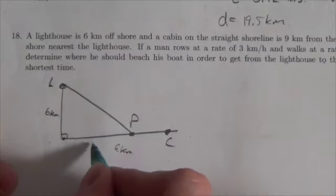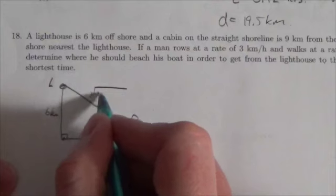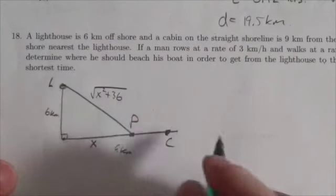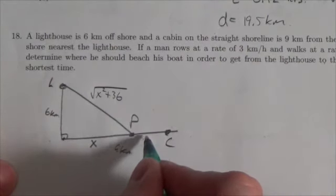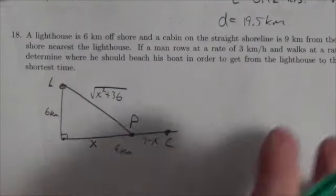Now I'm gonna call this distance here x, which will make this distance here the square root of x squared plus 36, and this right here, this distance will be 9 minus x.